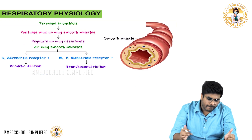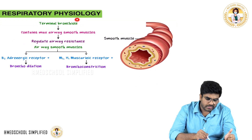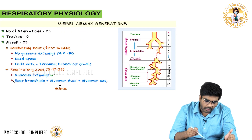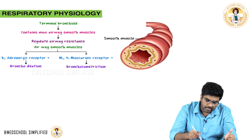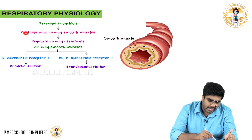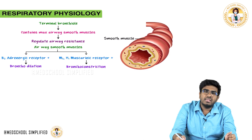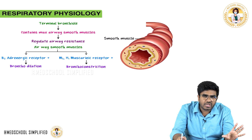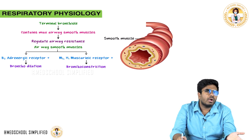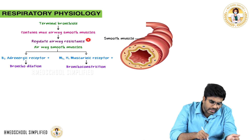Now let's discuss a few important points about the terminal bronchioles. Terminal bronchioles are the last part of the conducting zone and have a large amount of smooth muscle. The smooth muscle can undergo contraction and relaxation, leading to bronchoconstriction and bronchodilation — so they regulate airway resistance.